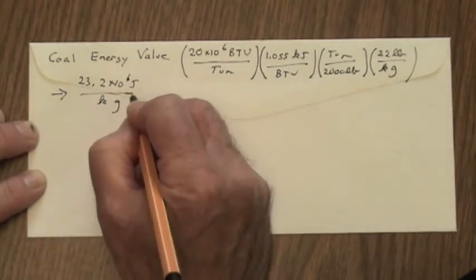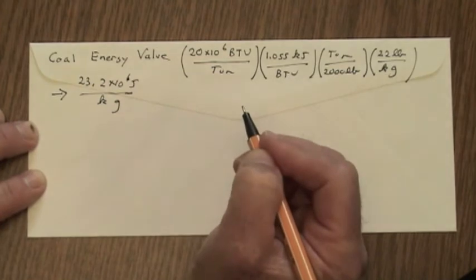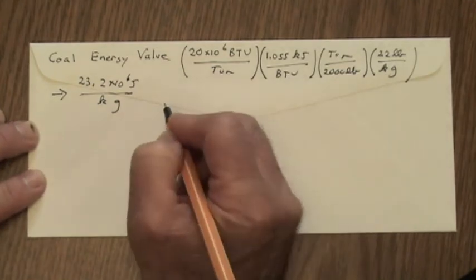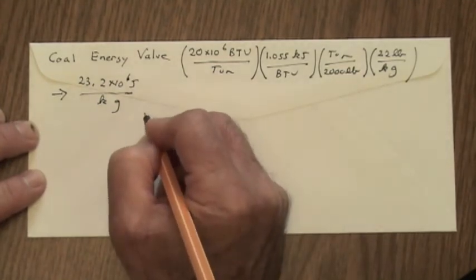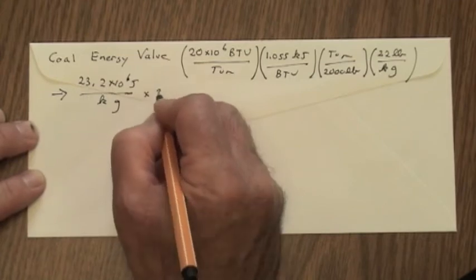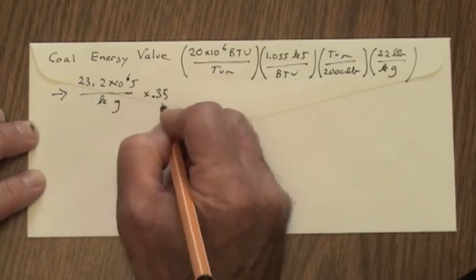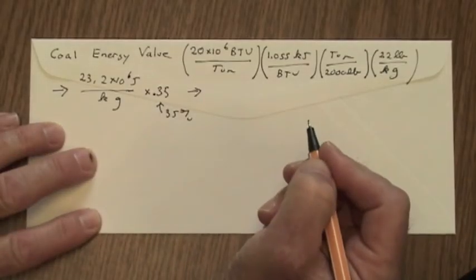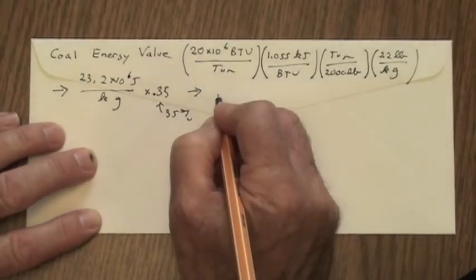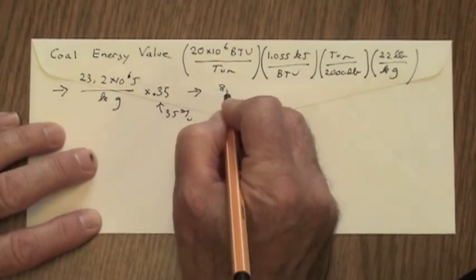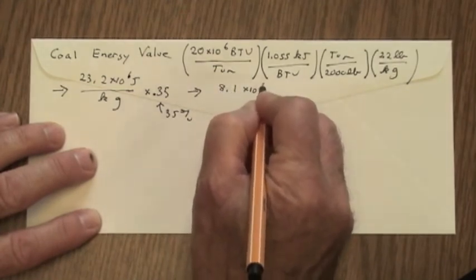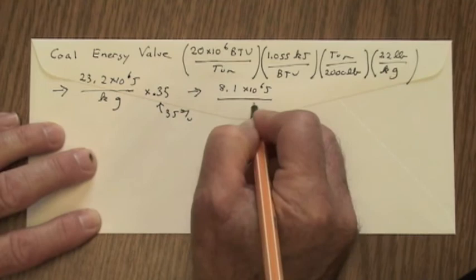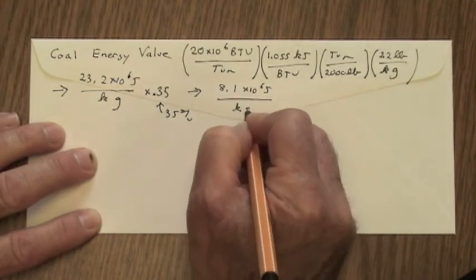Now, not all of that is going to end up as electrical energy because the power plant efficiency is not 100%. In fact, it's about 35% power plant efficiency. If the power plant efficiency is 35%, we have about 8.1 times 10 to the sixth joules of electrical energy per kilogram of coal.